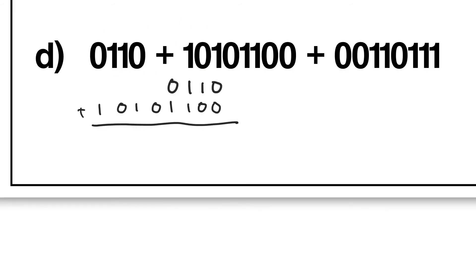So the first thing I want to do is add the first two numbers together. 0 and 0 is going to give me 0. 0 and 1 is 1. 1 and 1 will give me 2, so I carry that 1 over there — the 2 leaves me with 0. 0, 1 and 1 is going to give me 2 again. I carry the 2 over here, leaving me with 0, and then it's 1, 1, 0, 1.